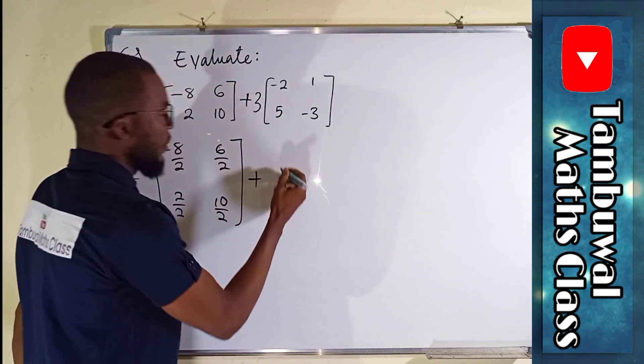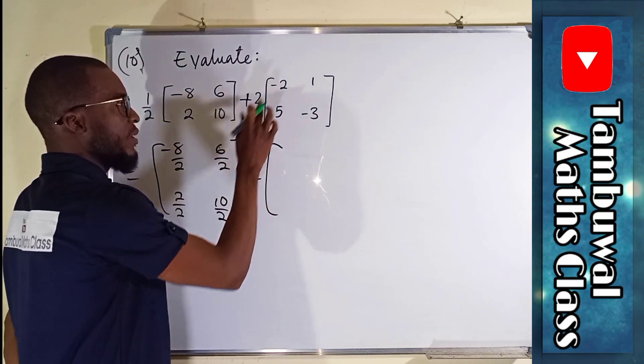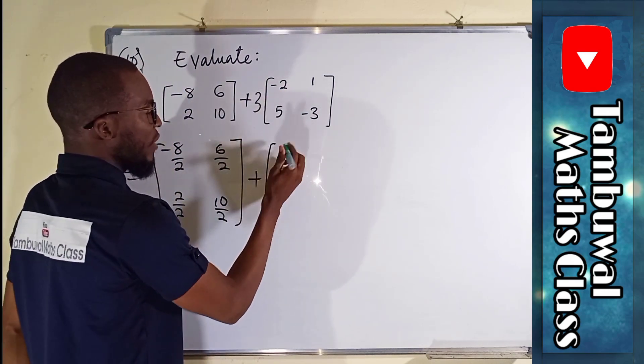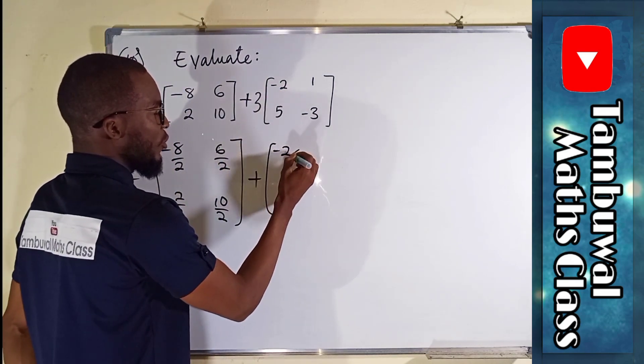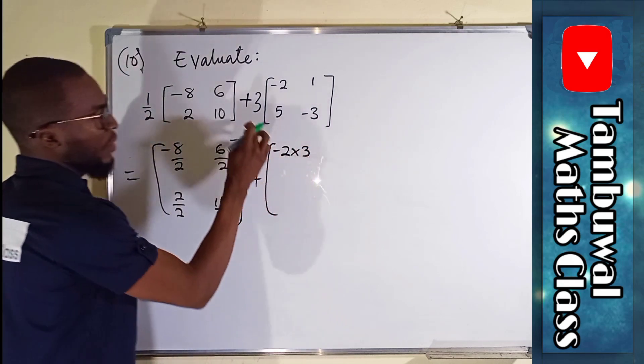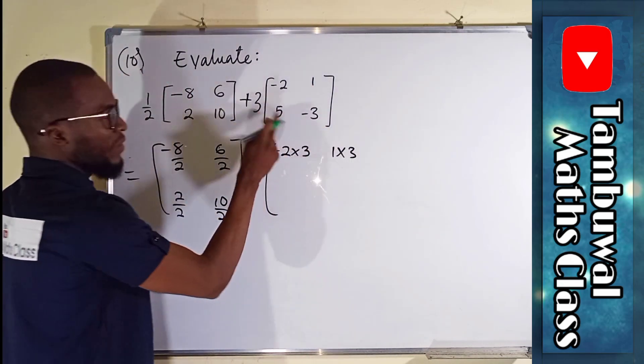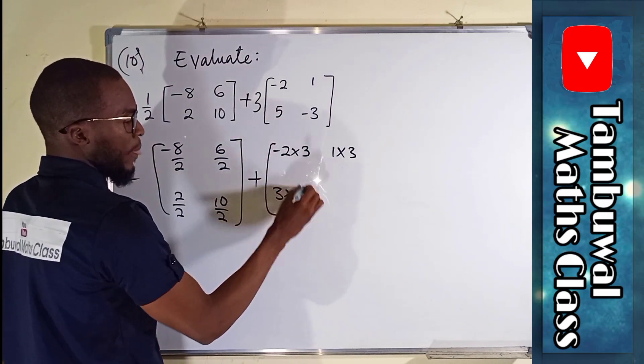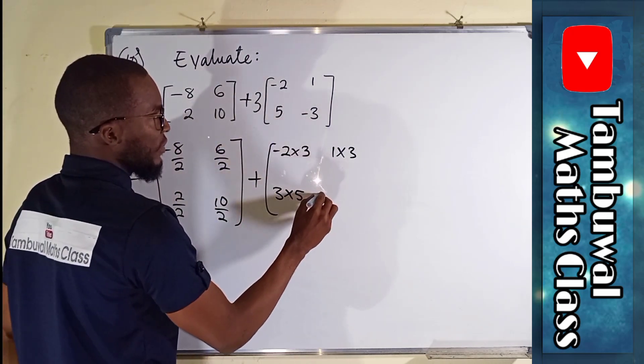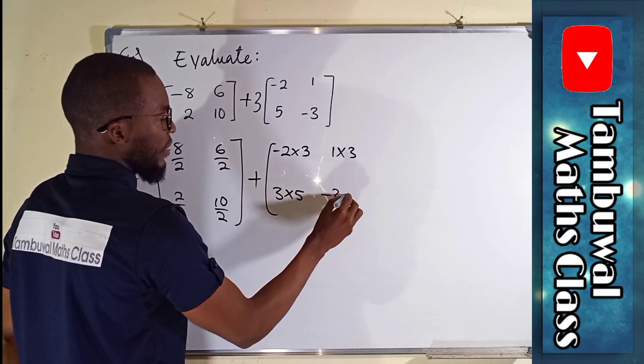Plus, we have another matrix. 3 times negative 2. We have negative 2 multiplied by 3. We have 3 times 1. We have 3 times 5. We have 3 times negative 3.